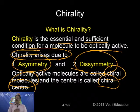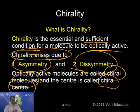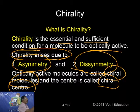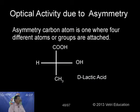Optically active molecules are called chiral molecules and optically active centers are called chiral centers. In a molecule there may be one, two, or three chiral centers - any number depending upon the nature of the compound. Now, chirality arises by two ways: one is due to asymmetry, and the other is due to dissymmetry. Let me discuss what is asymmetry and what is dissymmetry.